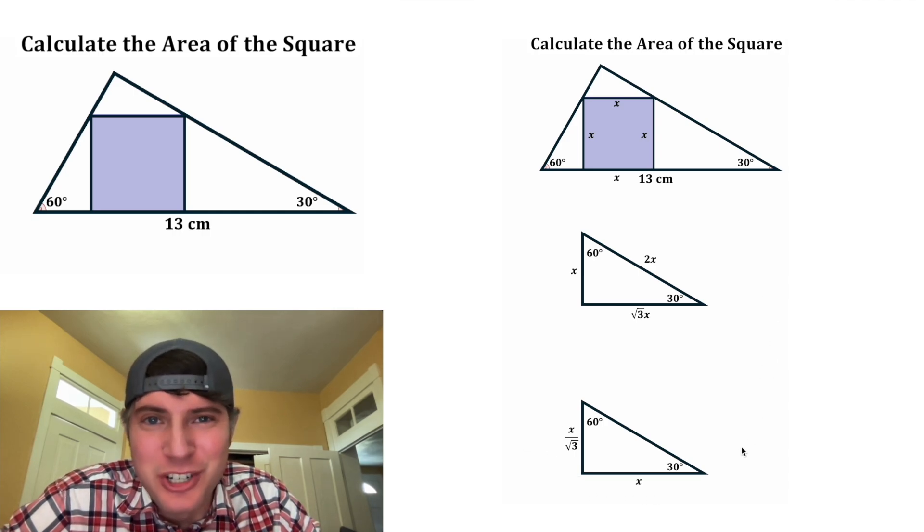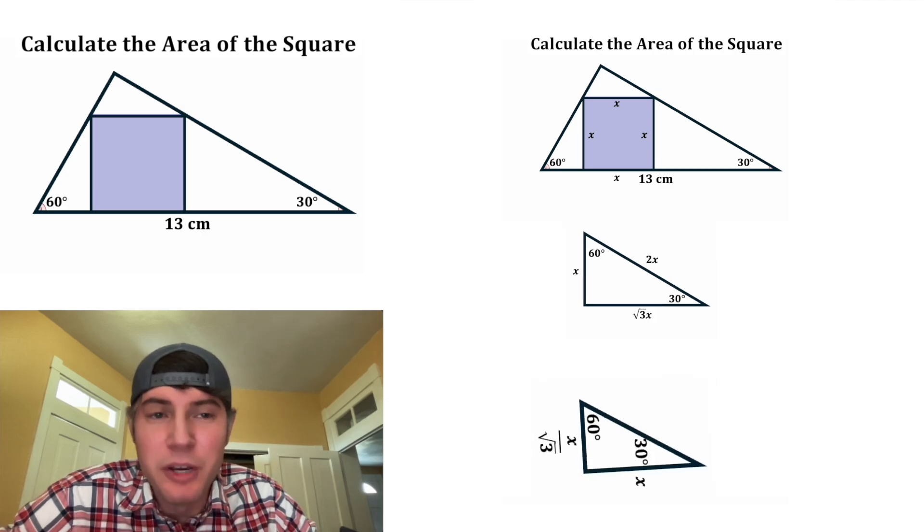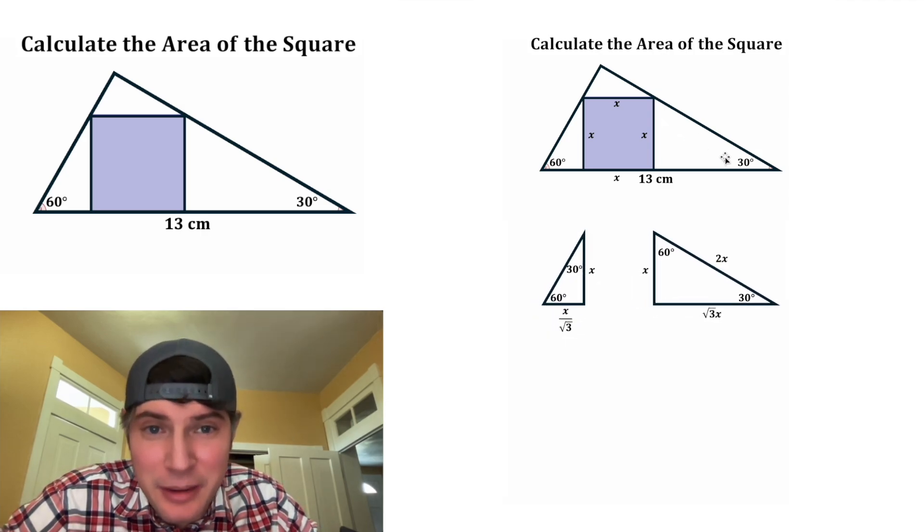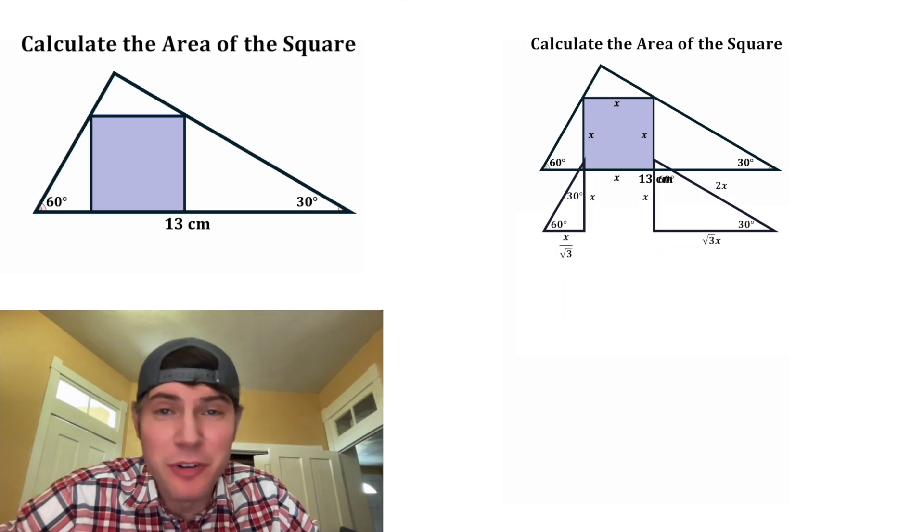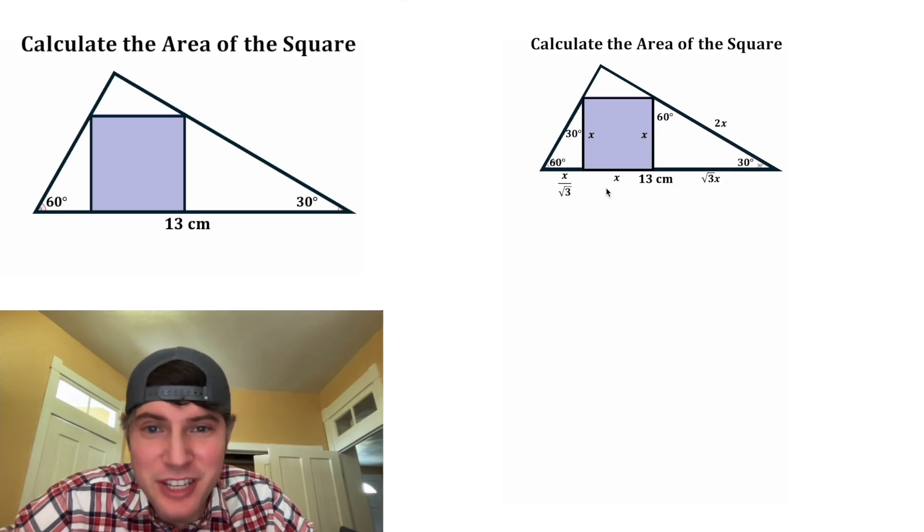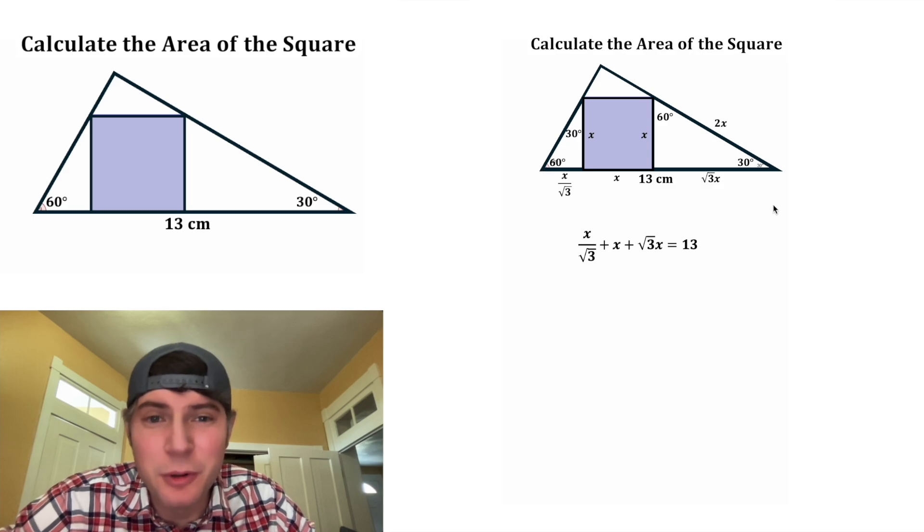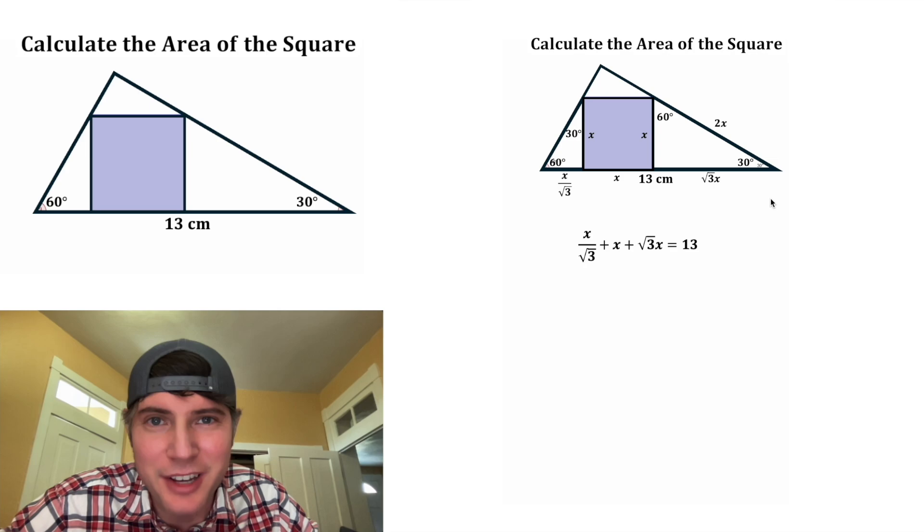Let's look at these two versions of a 30-60-90 triangle. We can align them like this, and now they match exactly what we have in our given figure. So let's place them on top of our original figure. And now we can use these side lengths. This base is equal to 13, but it's also equal to X over root three plus X plus root three X.